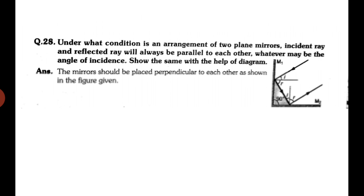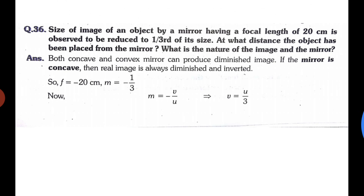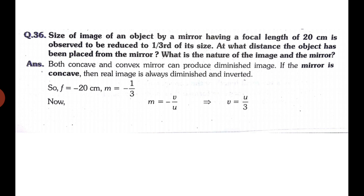Next numerical: the size of the image of an object by a mirror having focal length 20 cm is observed to be reduced to one-third of its size. We don't know if it's concave or convex yet — both can form diminished images. We do know the magnification is 1/3. The question asks: at what distance is the object placed, and what is the nature of the image and mirror?